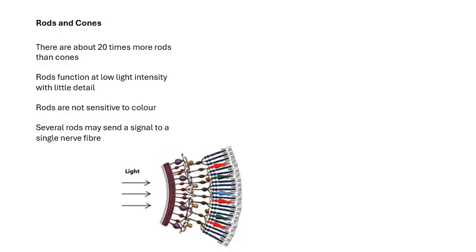Several rods may send a signal to a single nerve fiber. If you look at this diagram here, we've got three rods and they're all sending a signal to the same nerve fiber, whereas the cones all have their own nerve fiber.